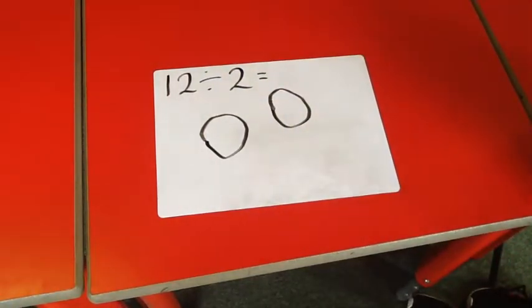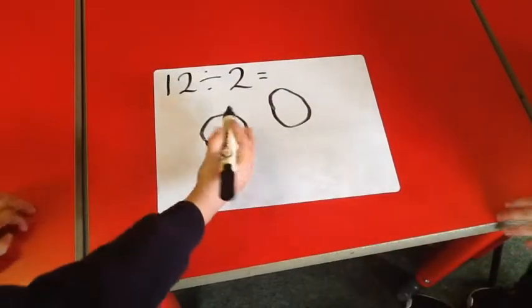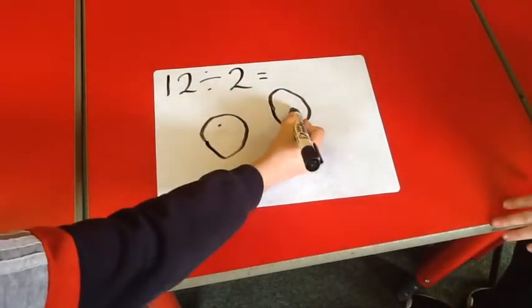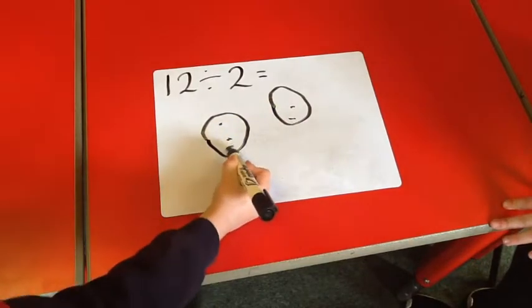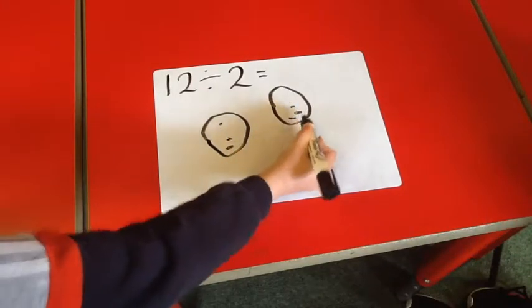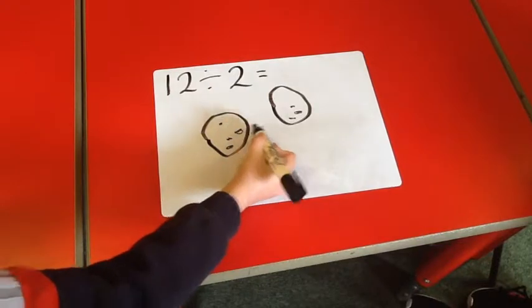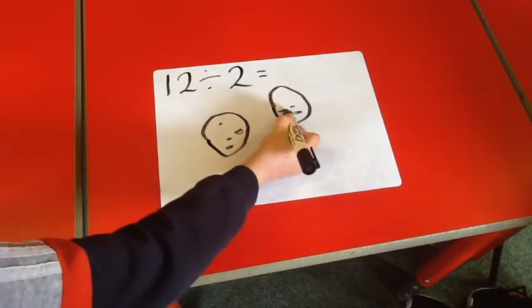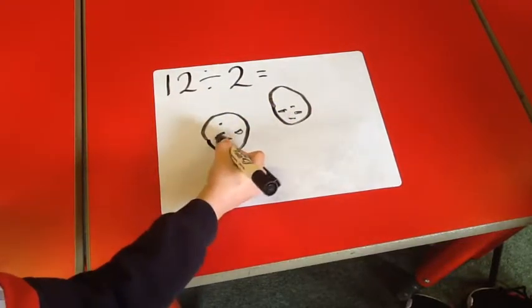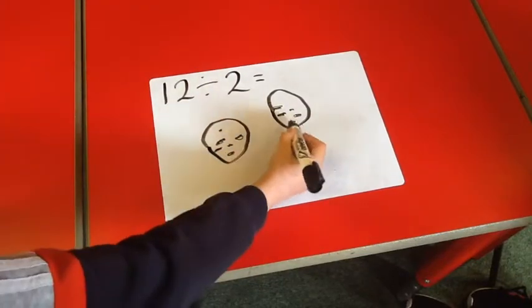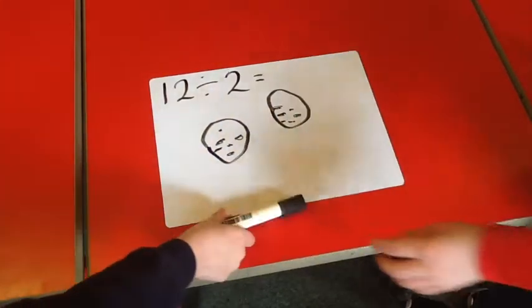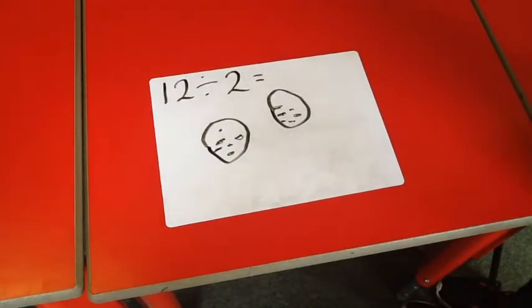Now we need to share 12 out. 1, 2, 3, 4, 5, 6, 7, 8, 9, 10, 11, 12. And now we need to count each circle in case it's not equal.